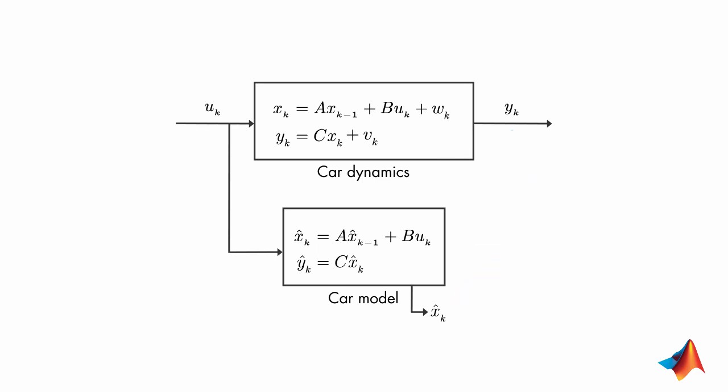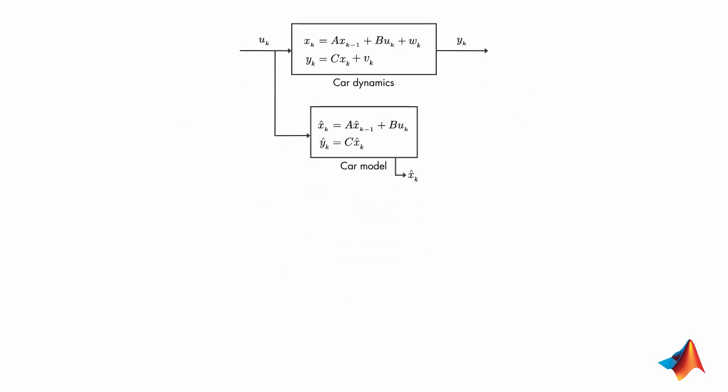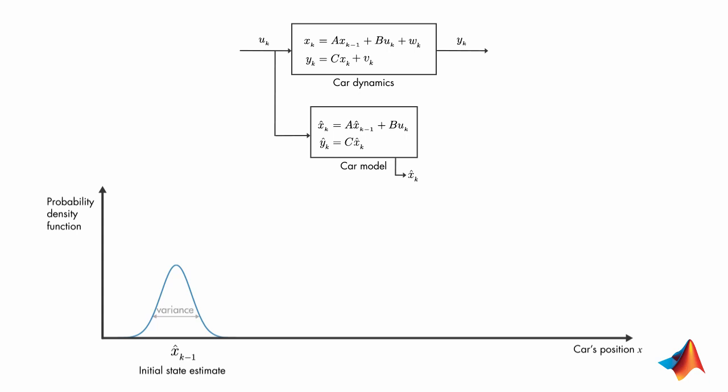We'll discuss the working principle of the Kalman filter visually with the help of probability density functions. At the initial time step, k-1, the actual car position can be anywhere around the estimate x hat k-1, and this uncertainty is described by this probability density function.